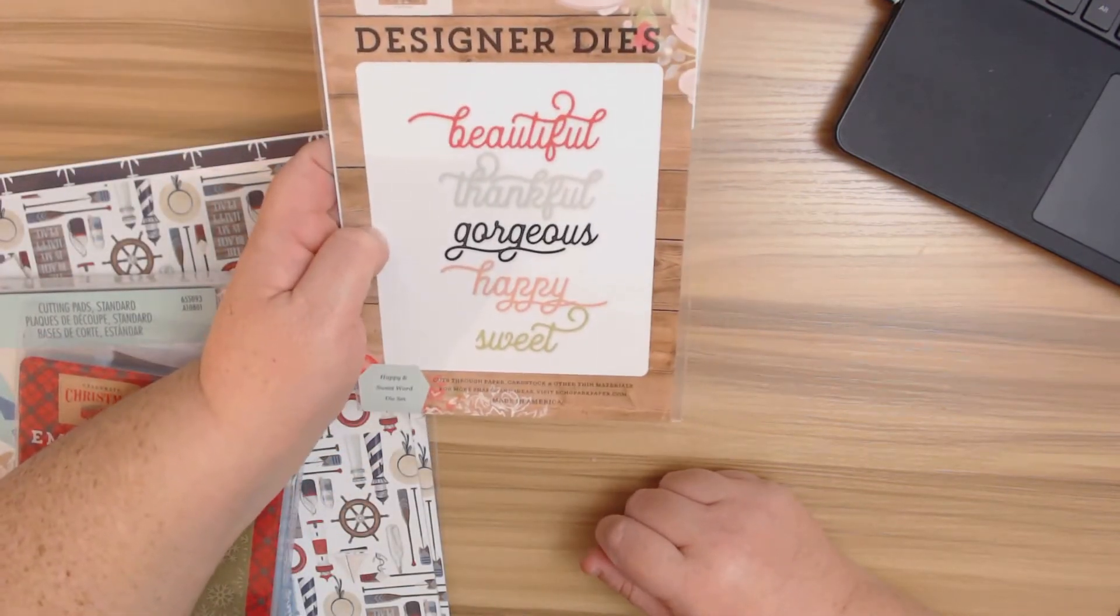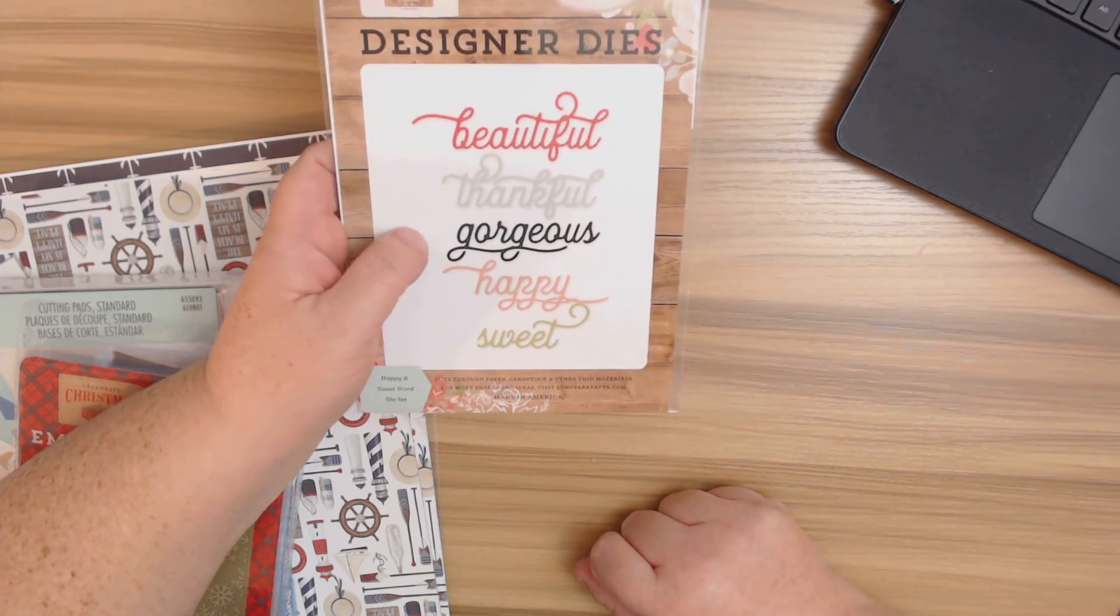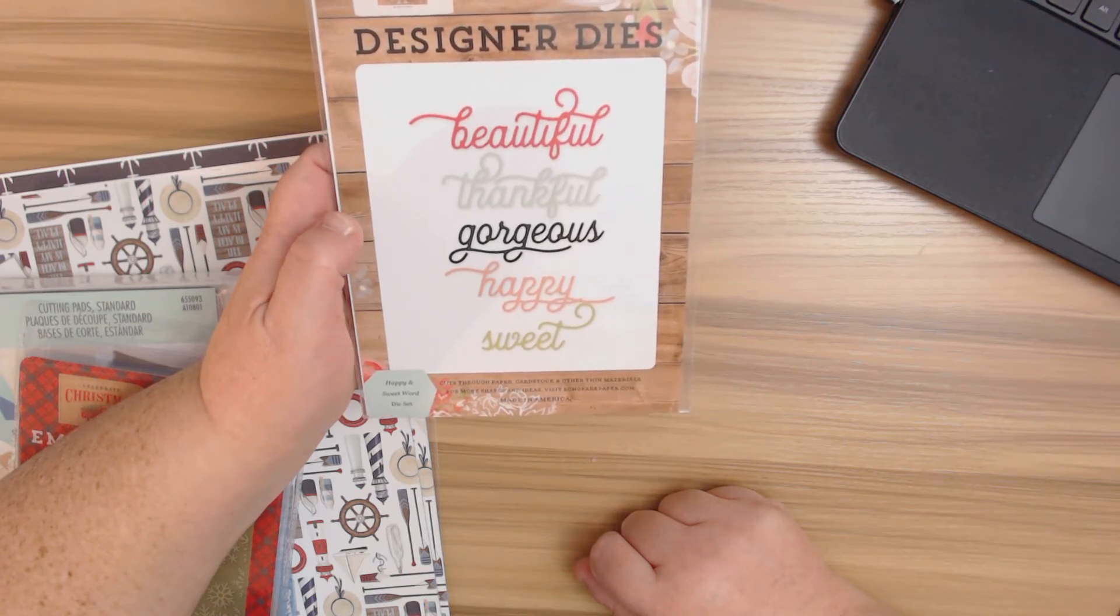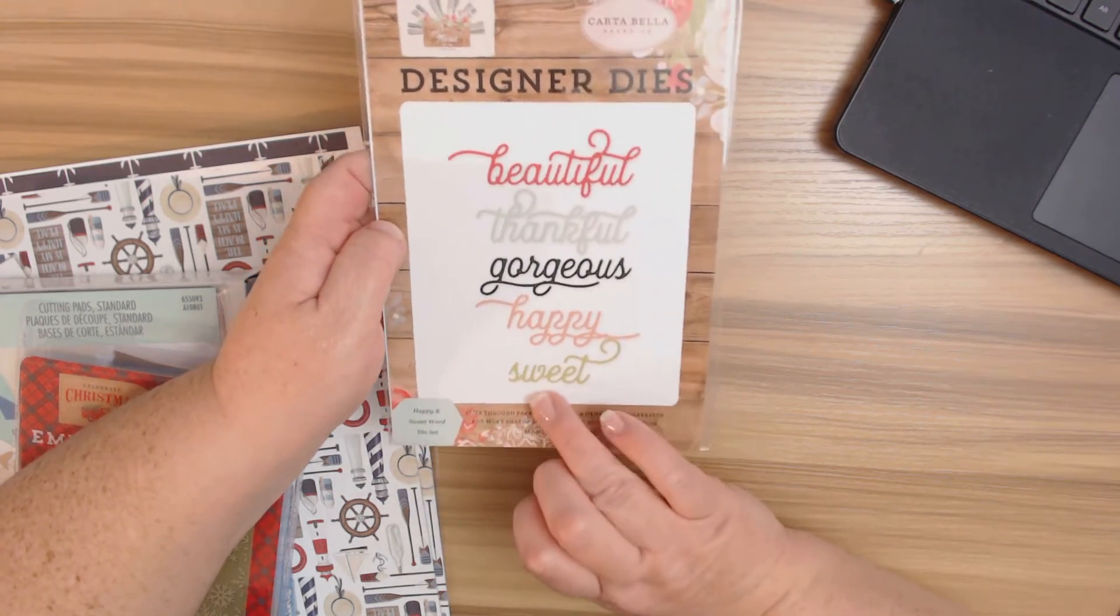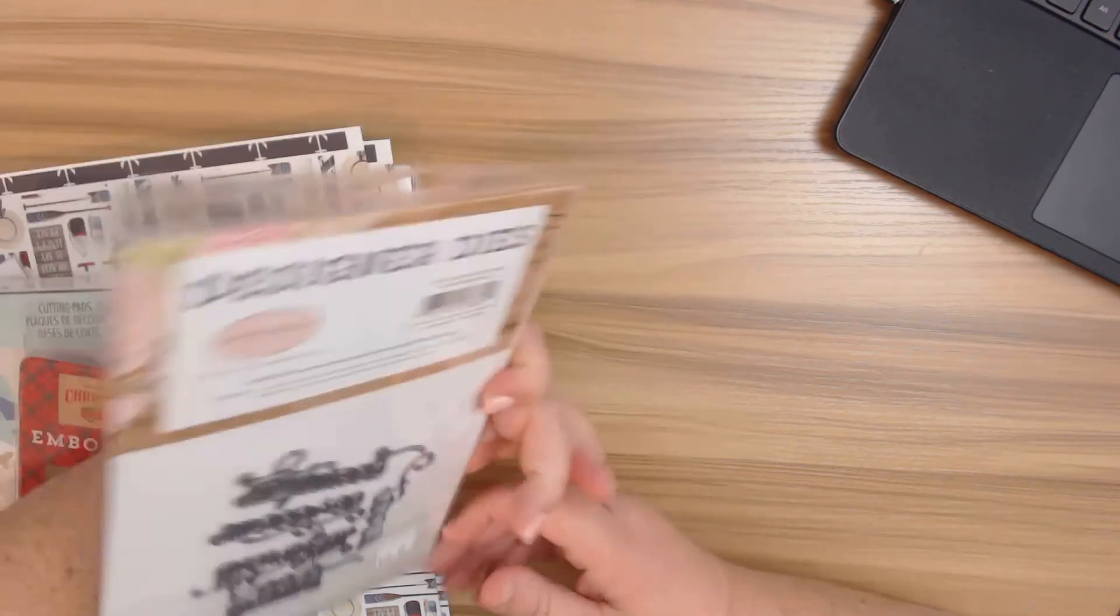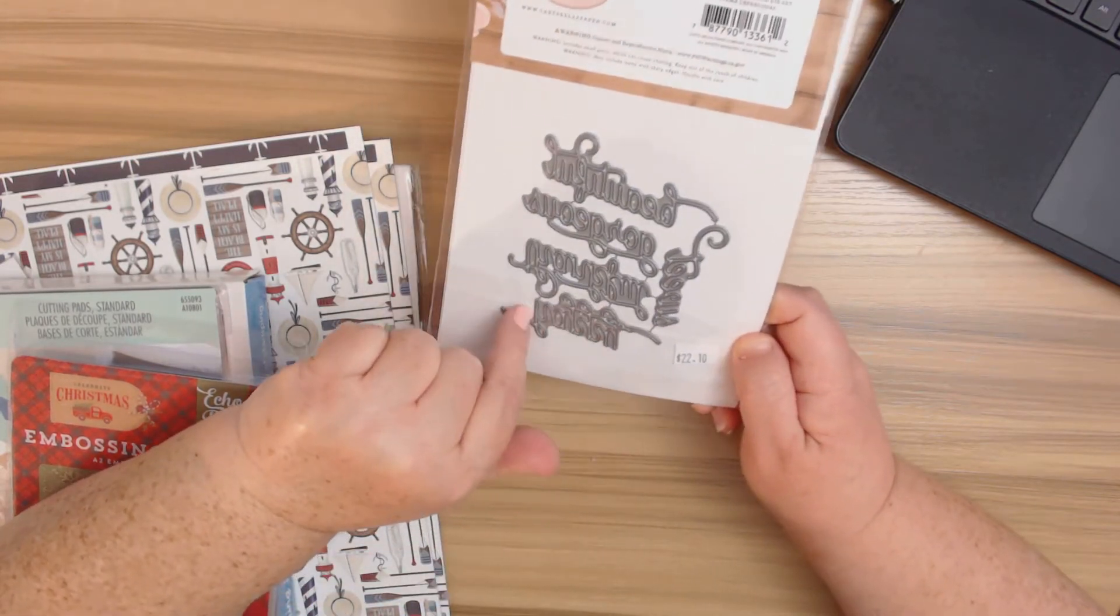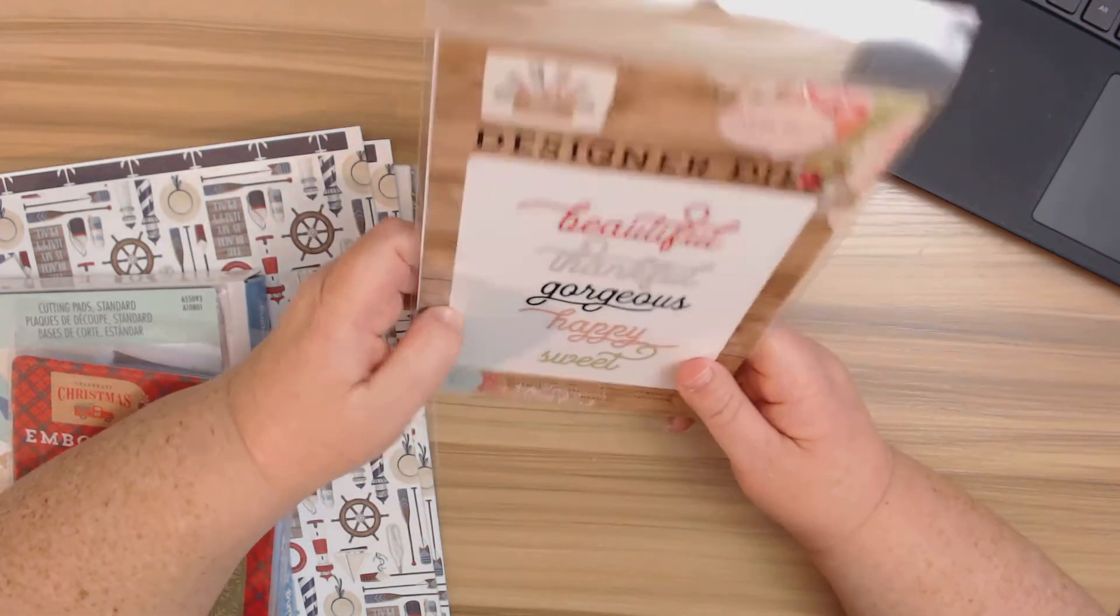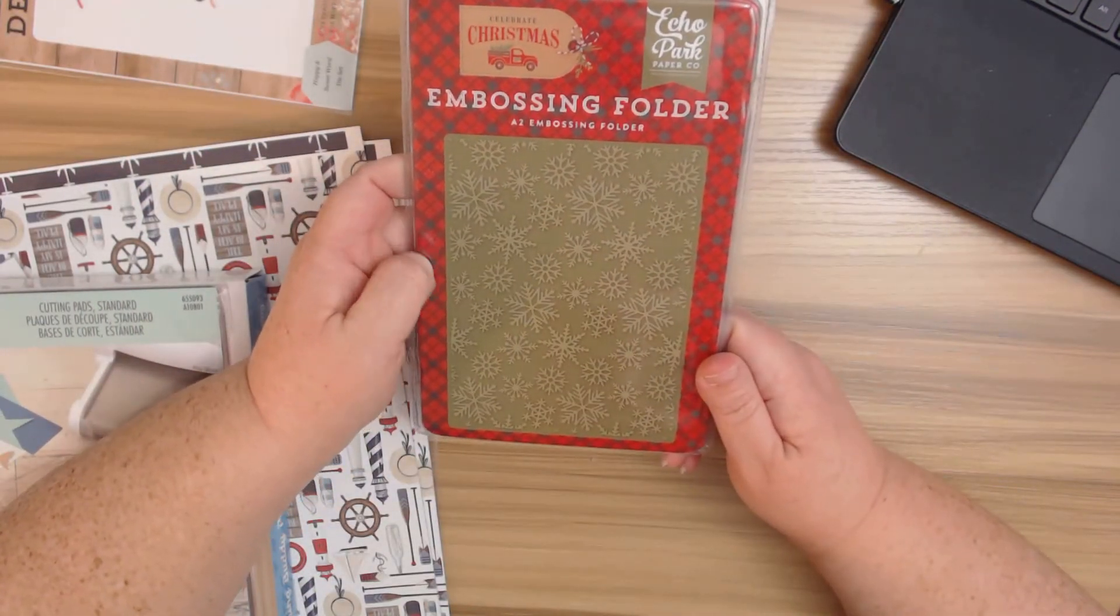Now y'all know I love dies and so I thought I don't have that many word dies. I decided to pick this one out. This is Carta Bella and this is the Happy and Sweet word die set. So it has Beautiful, Thankful, Gorgeous, Happy and Sweet, and I'm telling you I really love this font. Let me tell you why I really love this font: because it's all on one thing. I don't have time to be piecing together all these little letters, okay? So if it is all together on one thing, you know I'm on it.